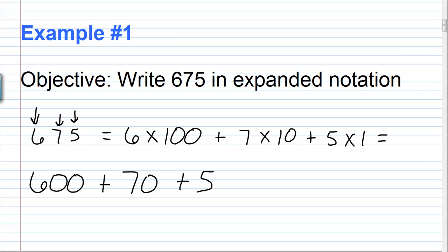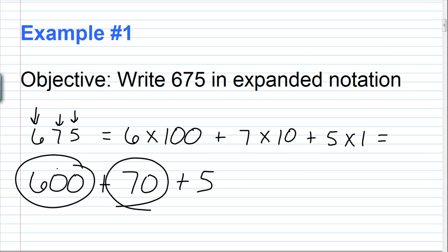If you look at this, you can tell that this is a tool that we use for place value. If I wanted to know what's the value of the 7, well it's 70. What's the value of the 6? Well, it's 600. What's the value of the 5? Well, it's just 5.